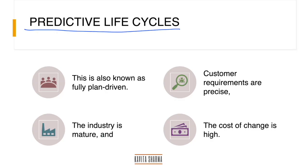Let's talk about predictive life cycle. It is also called fully plan-driven. When should I use it? This is a life cycle where you've gone through this particular process so many times. Think about construction — you construct a building: first floor, second floor, third floor, then wiring, plumbing, then finishing, and then you hand it over. You do not go back and redesign after the second floor. A predictive life cycle means we plan, do, check, act, and deliver.